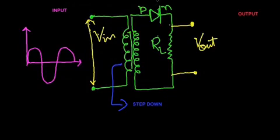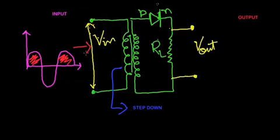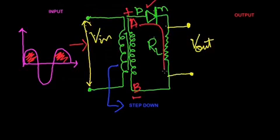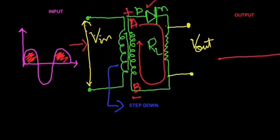When the AC input positive half cycle enters — the one shaded with red — the voltage enters the primary side terminals, and on the secondary side terminals A and B, the positive cycle will make terminal A positive and terminal B negative, making this diode forward biased. When the diode is forward biased, current will start to flow in the conventional direction, and you will get an output across our RL.